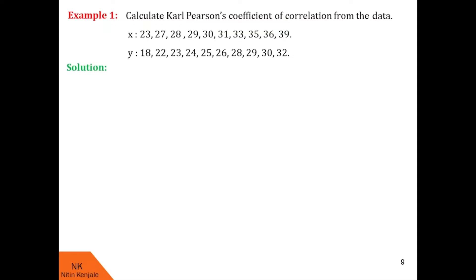Here we are asked to calculate Karl Pearson's coefficient of correlation from the following data. There are two data sets given: x and y. When x is 23, y is 18; when x is 27, y is 22, and so on. The last values given are when x is 39, y is 32.